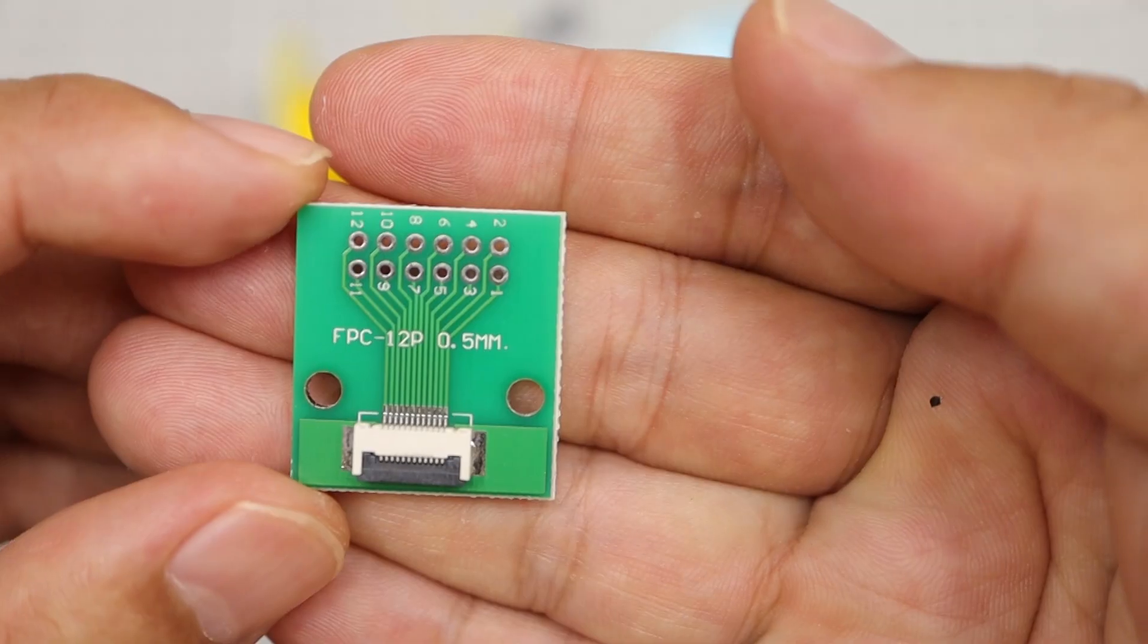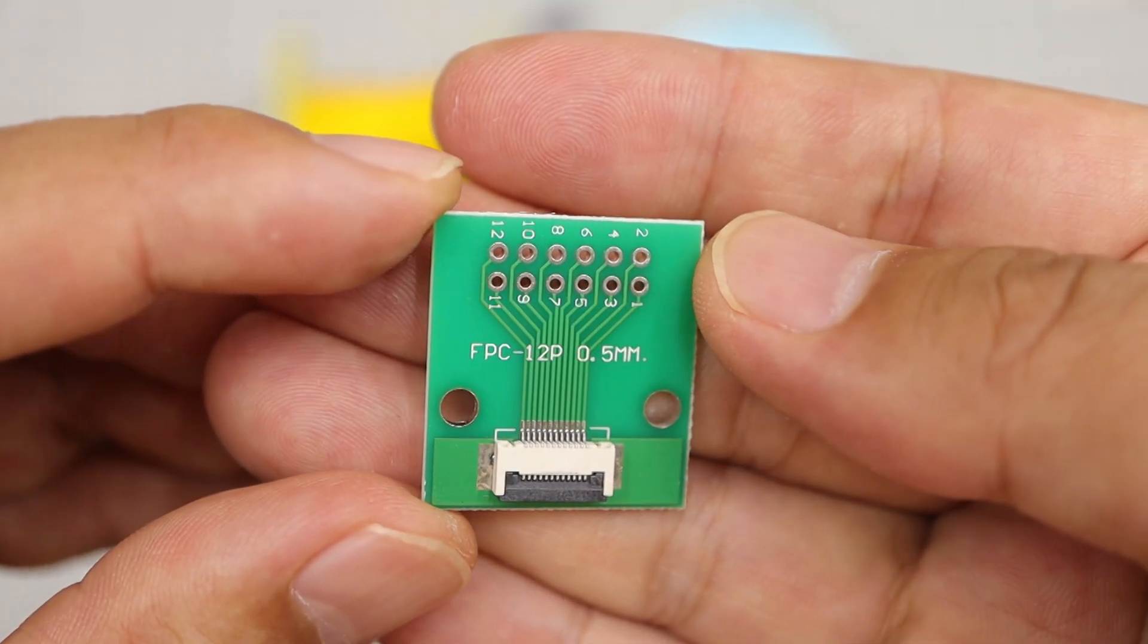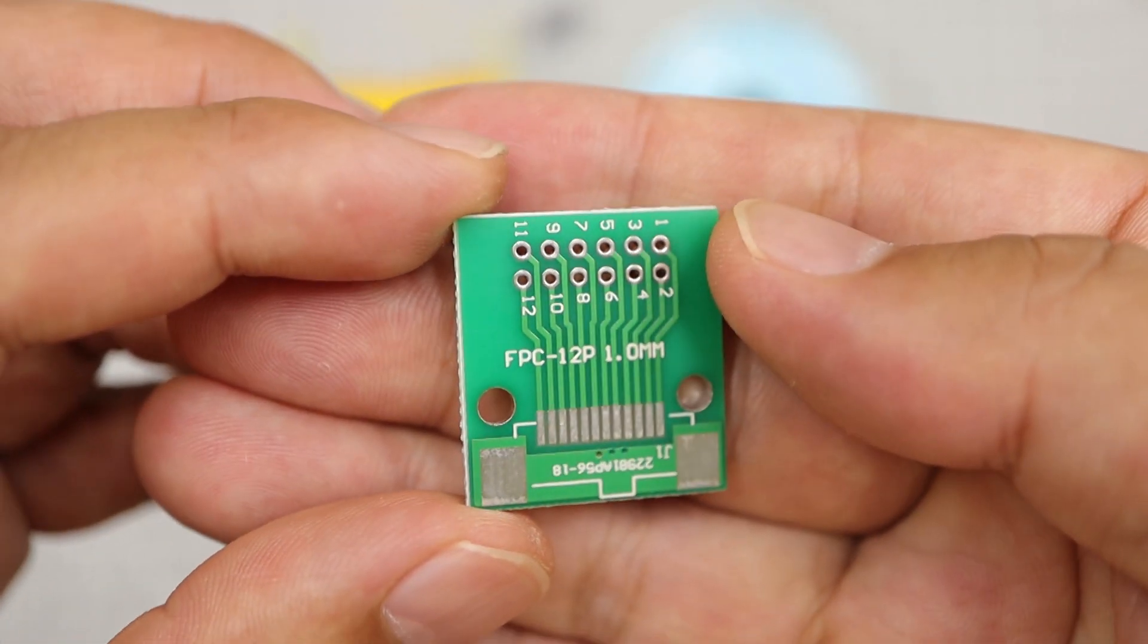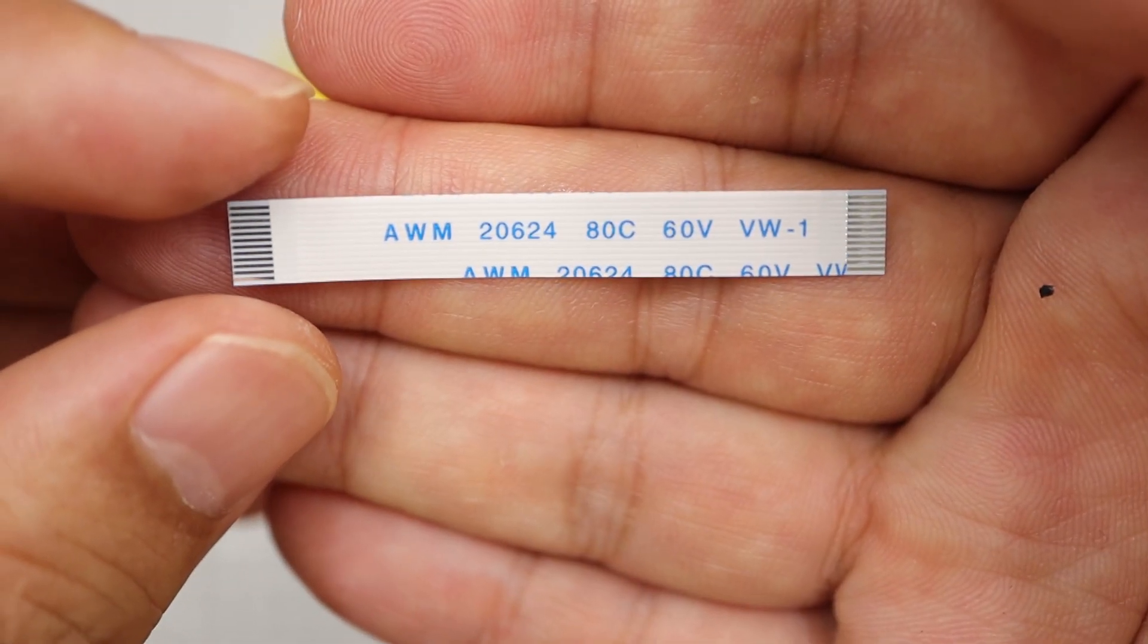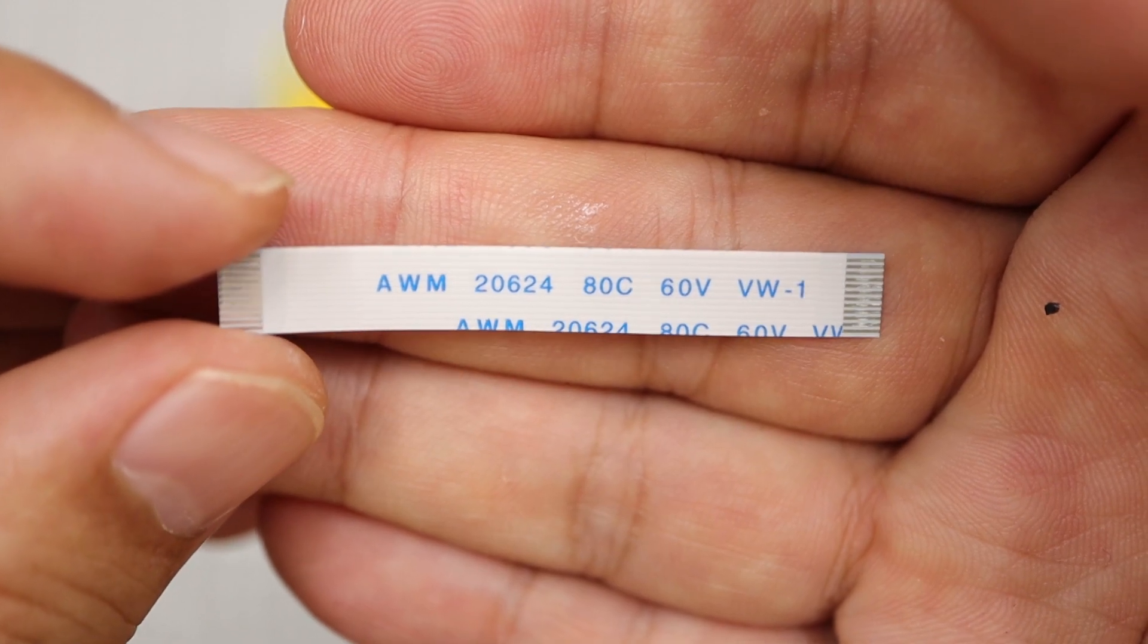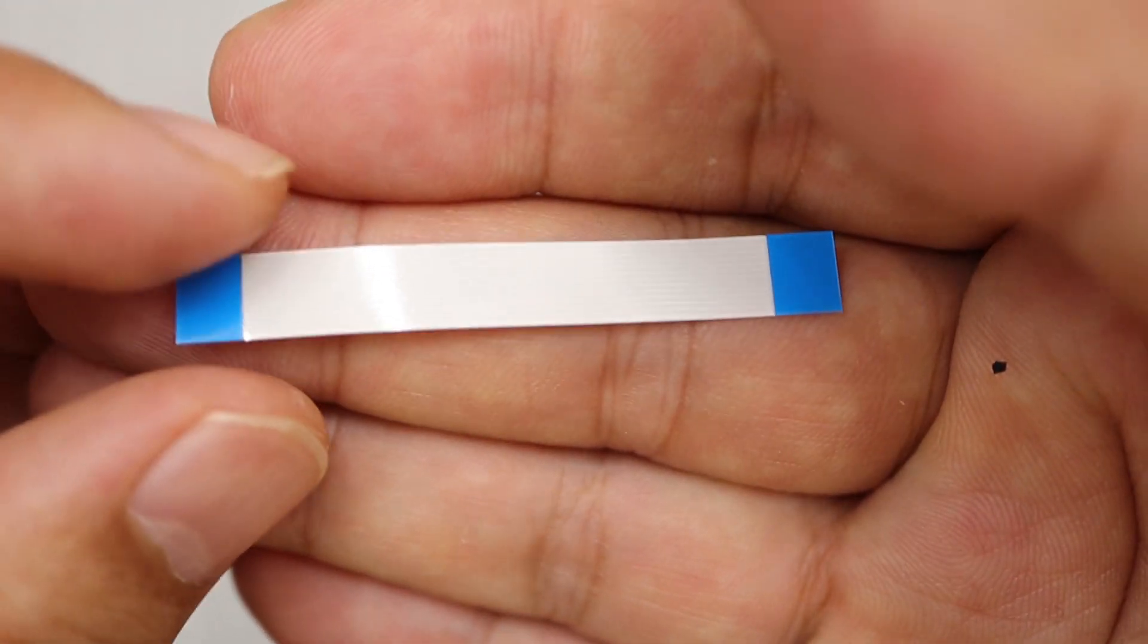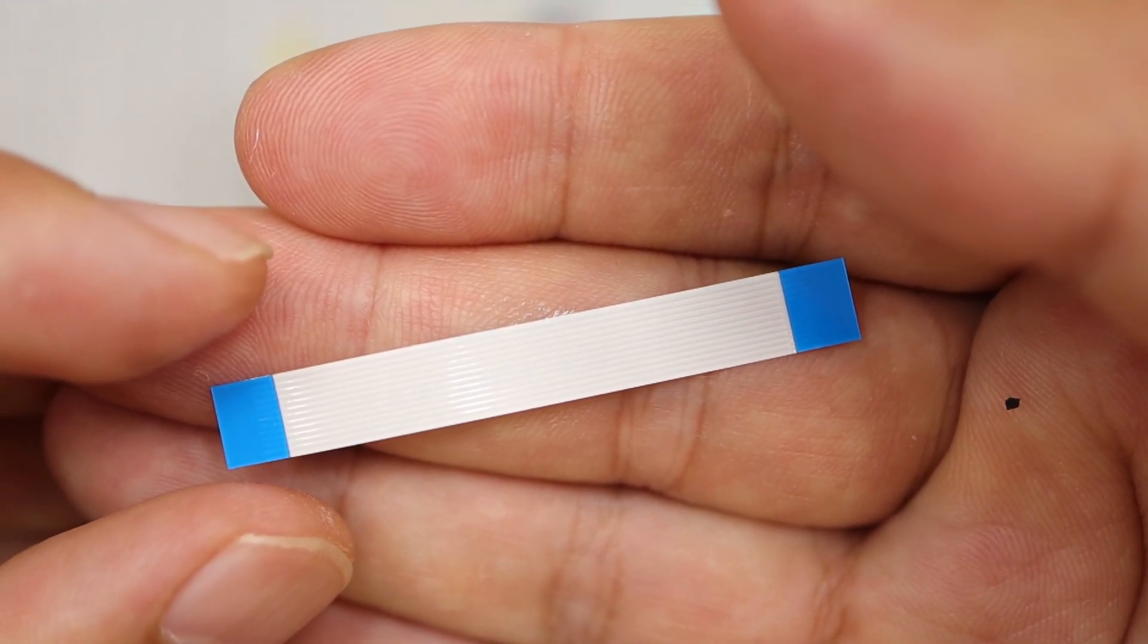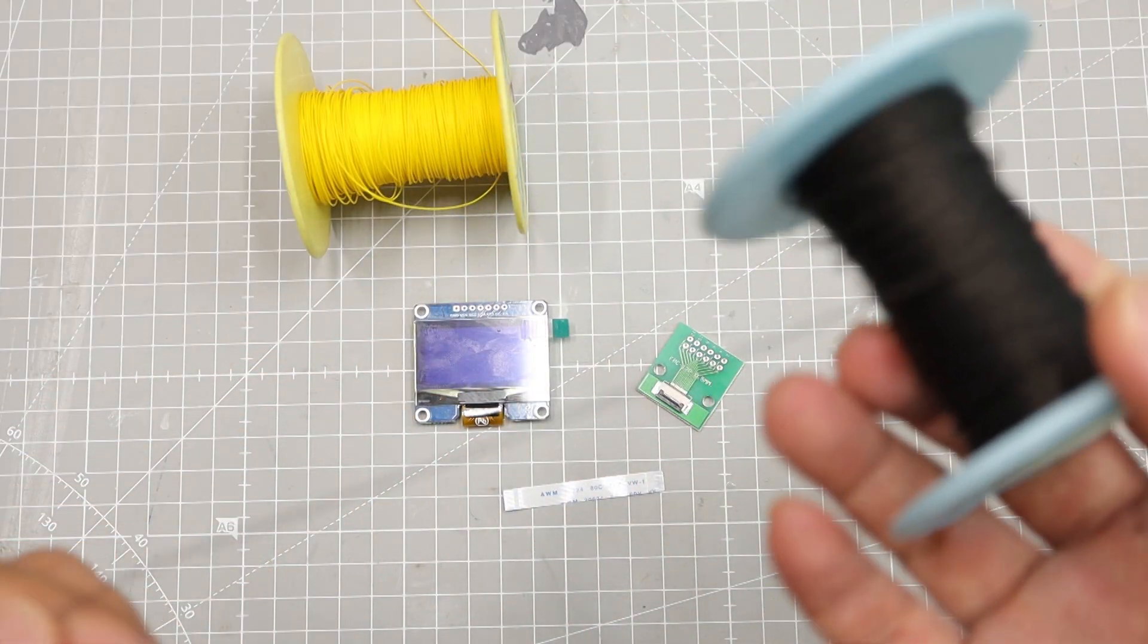Adapter board, 0.5mm pitch, 12 pins for 1.54 inch OLED. Flexible cables, 0.5mm pitch, 5cm length, with the same side contact. And some thin wires.